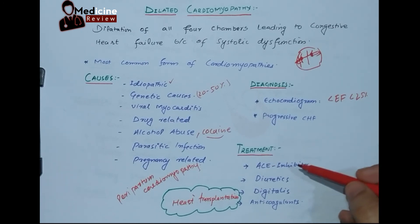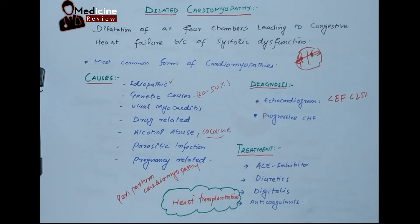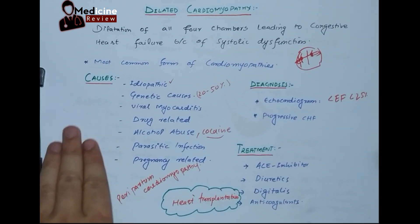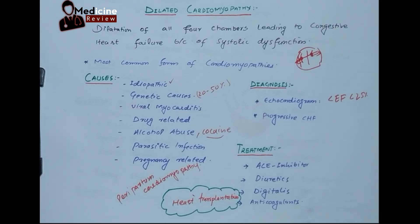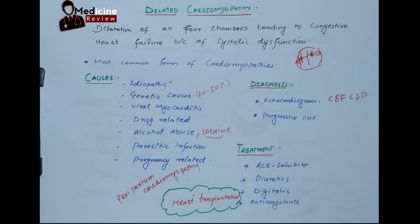For treatment, first we go for symptomatic or conservative treatment. ACE inhibitors decrease the load over the heart to reduce congestion. Diuretics reduce the fluid level in the blood and relieve congestion. Digitalis is an inotropic agent that increases the systolic function of the heart. Anticoagulants are given because blood stasis in the heart and major blood vessels creates a high risk of thromboembolism.